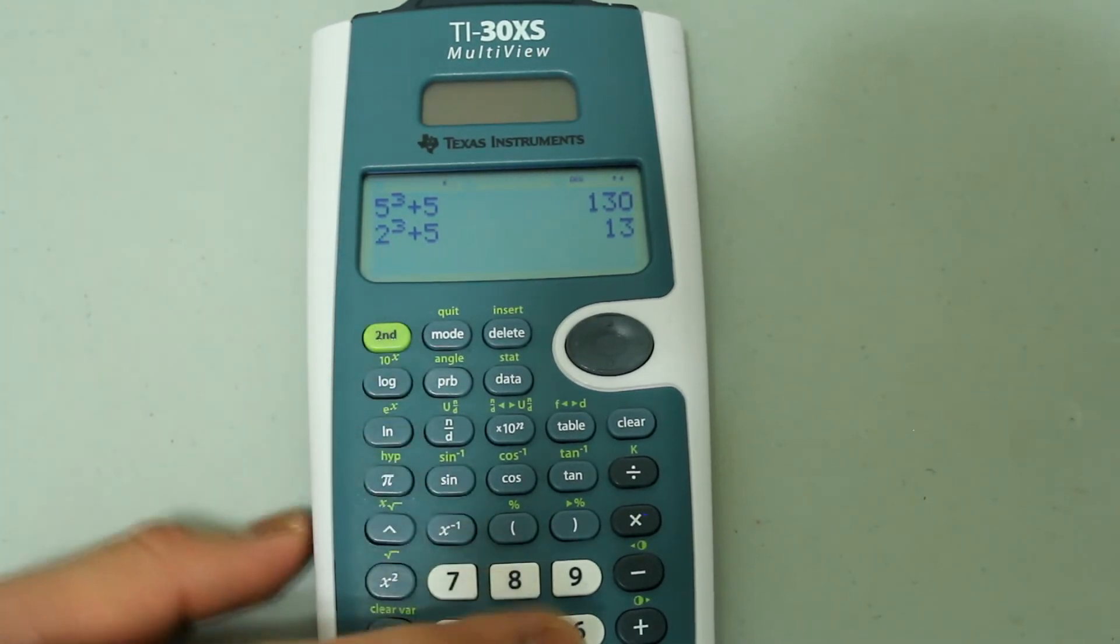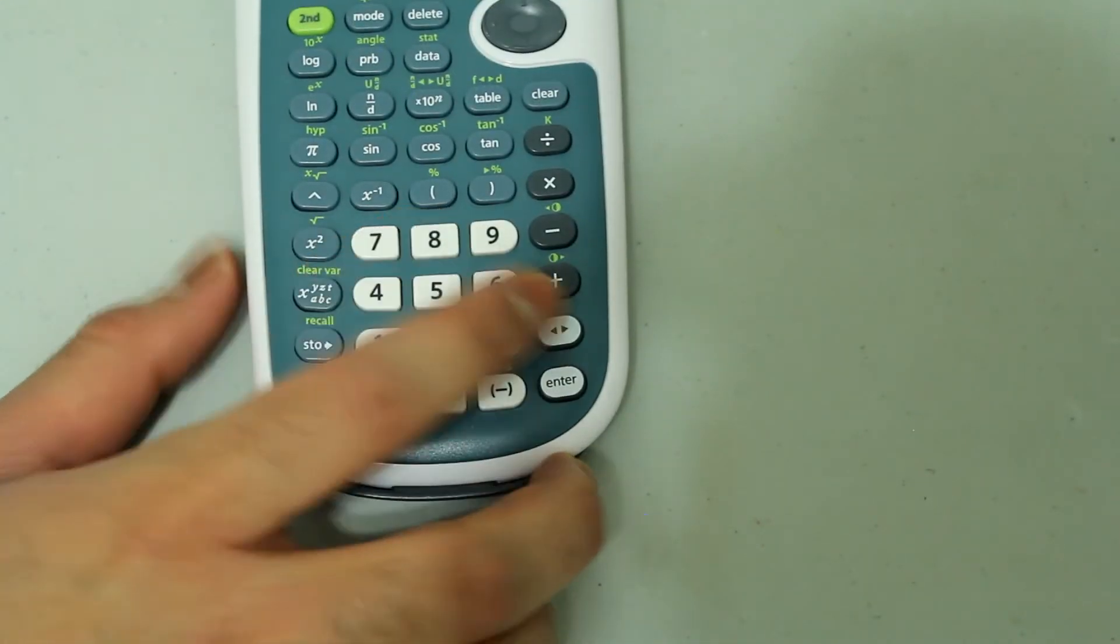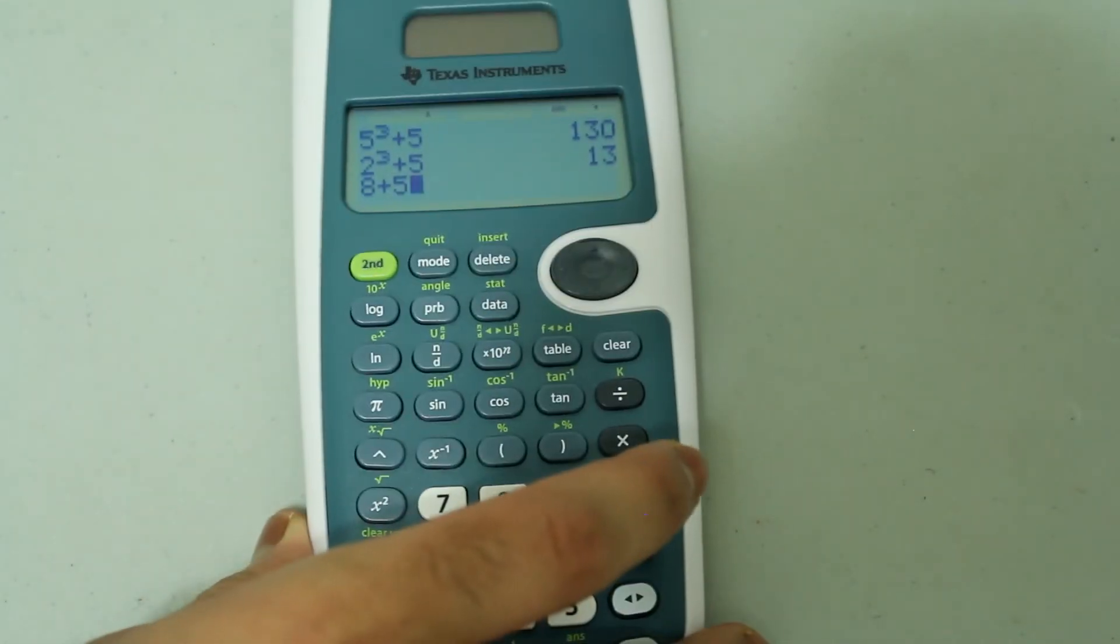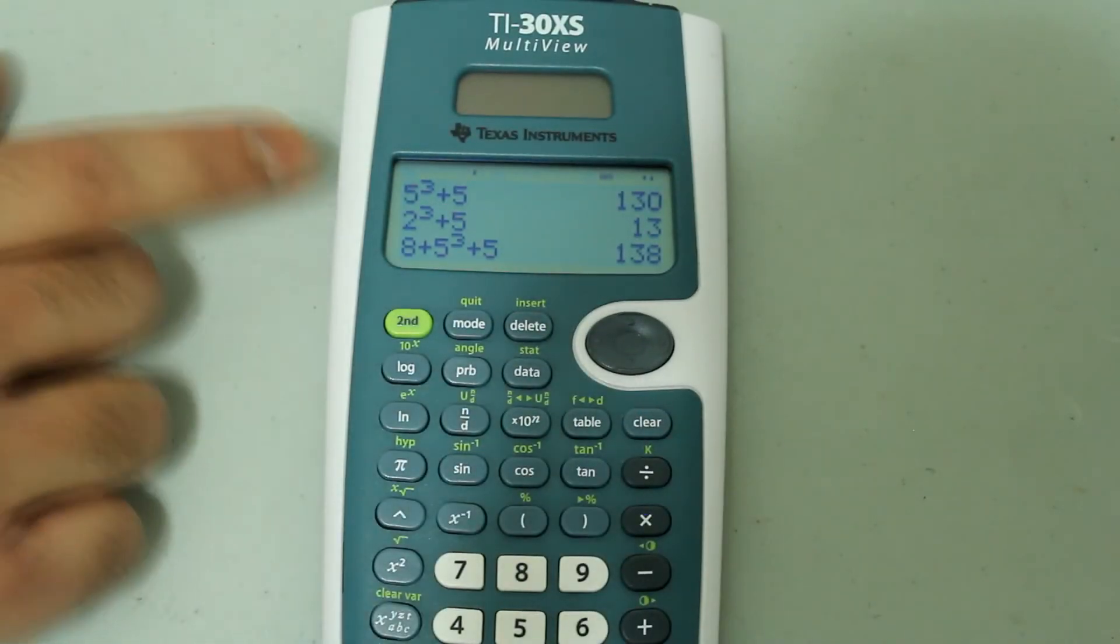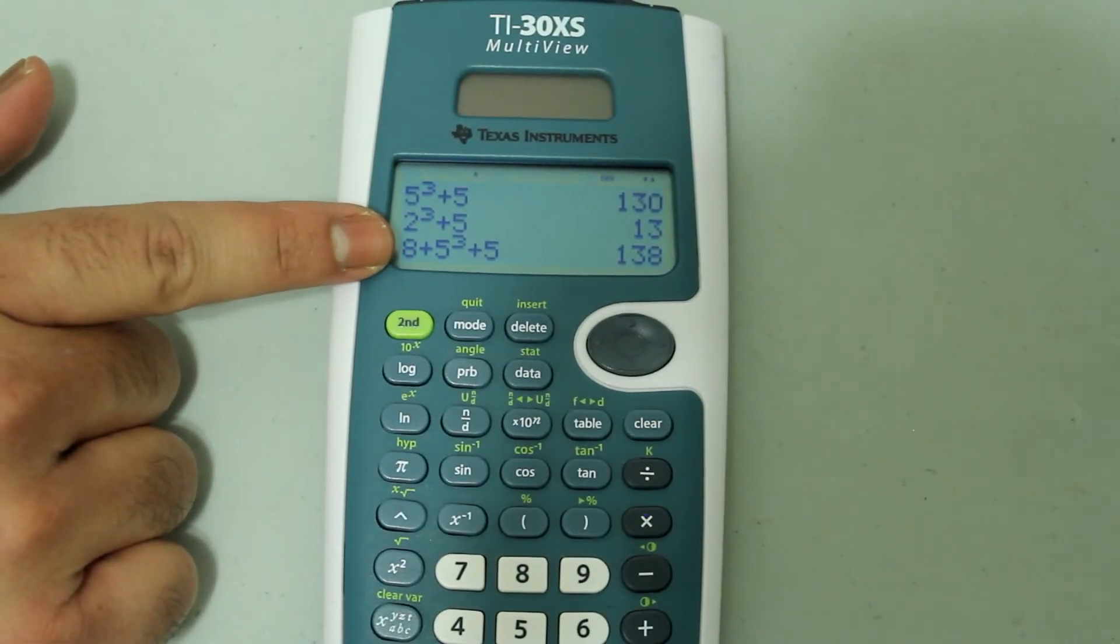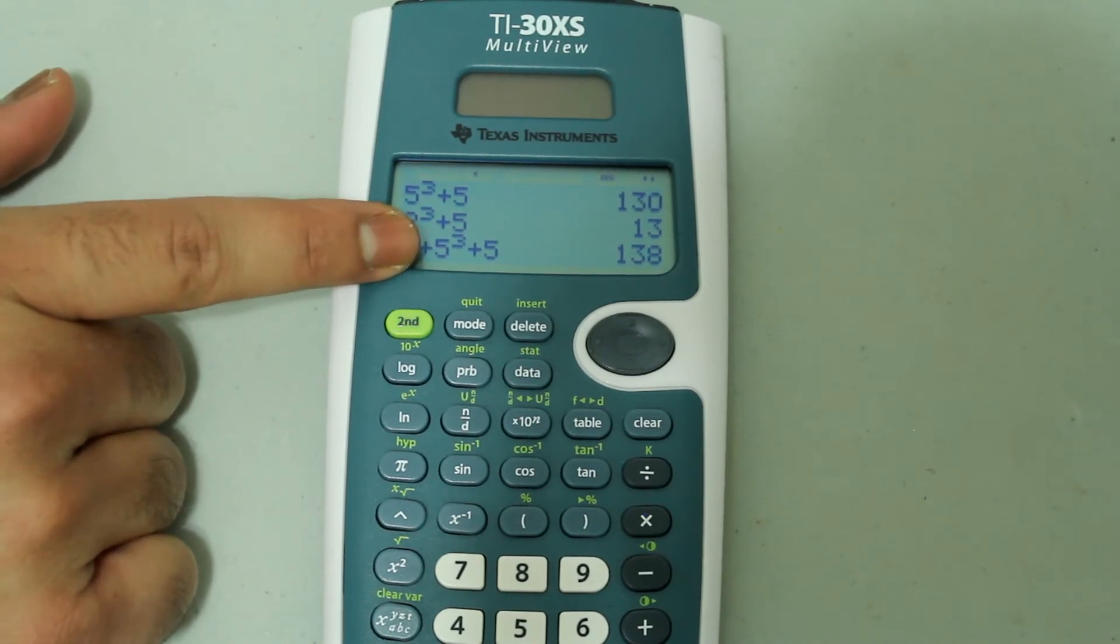So if I do, for example, 8 plus 5, so the entry looks like this, and I press enter, notice that the last number that is entered, the operation is applied to that.